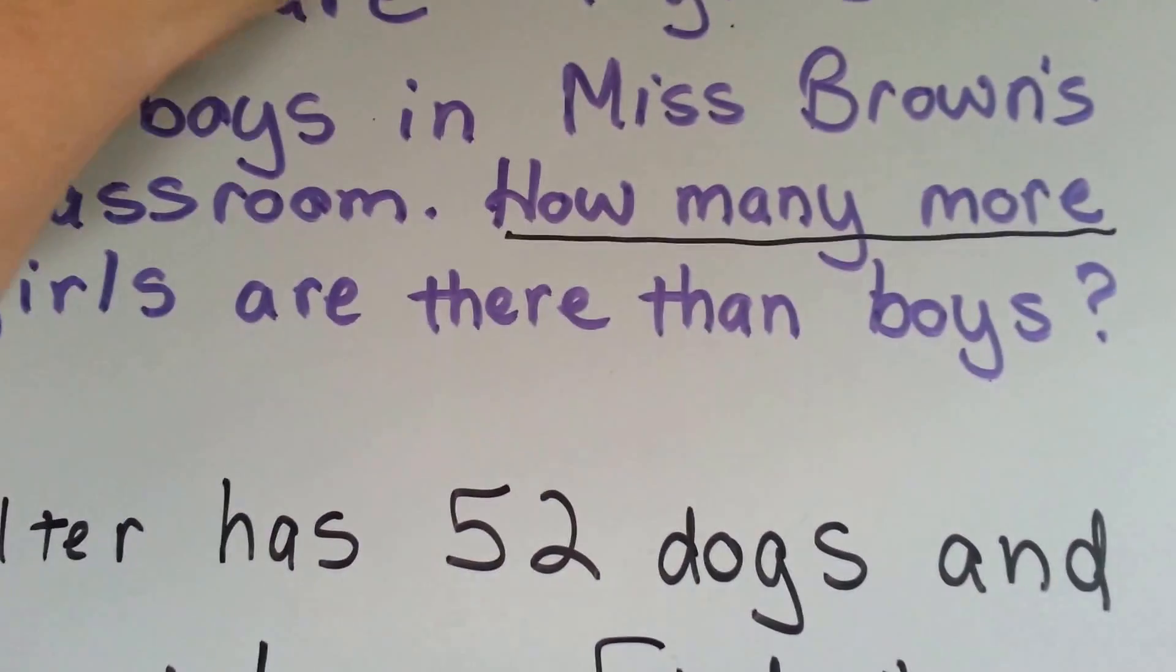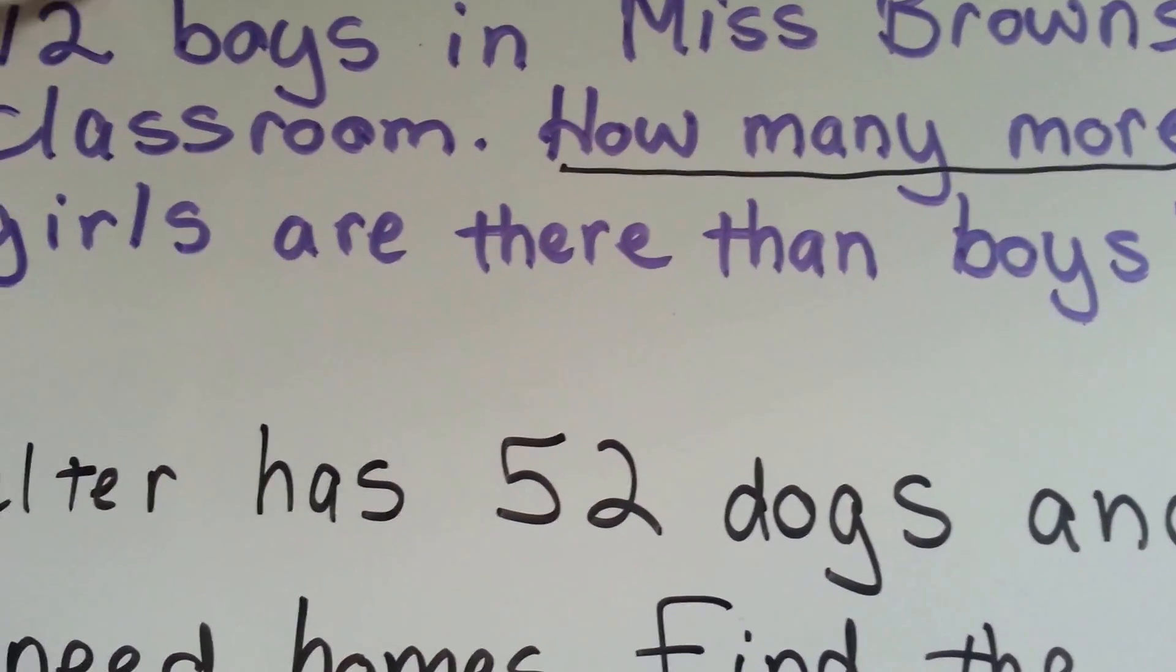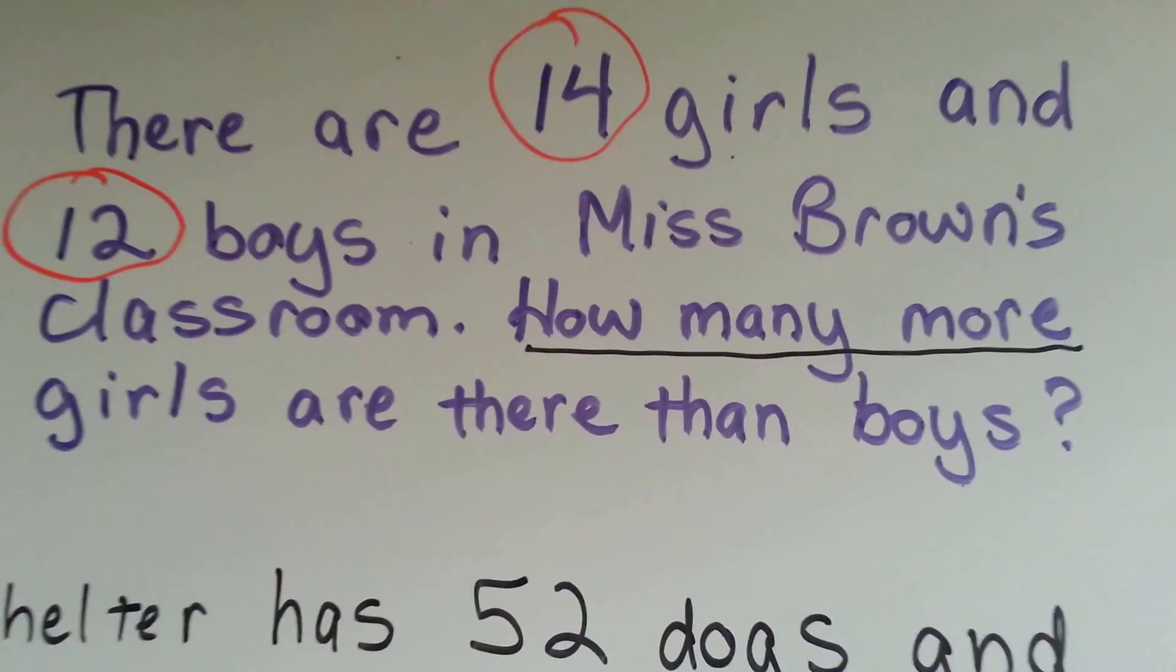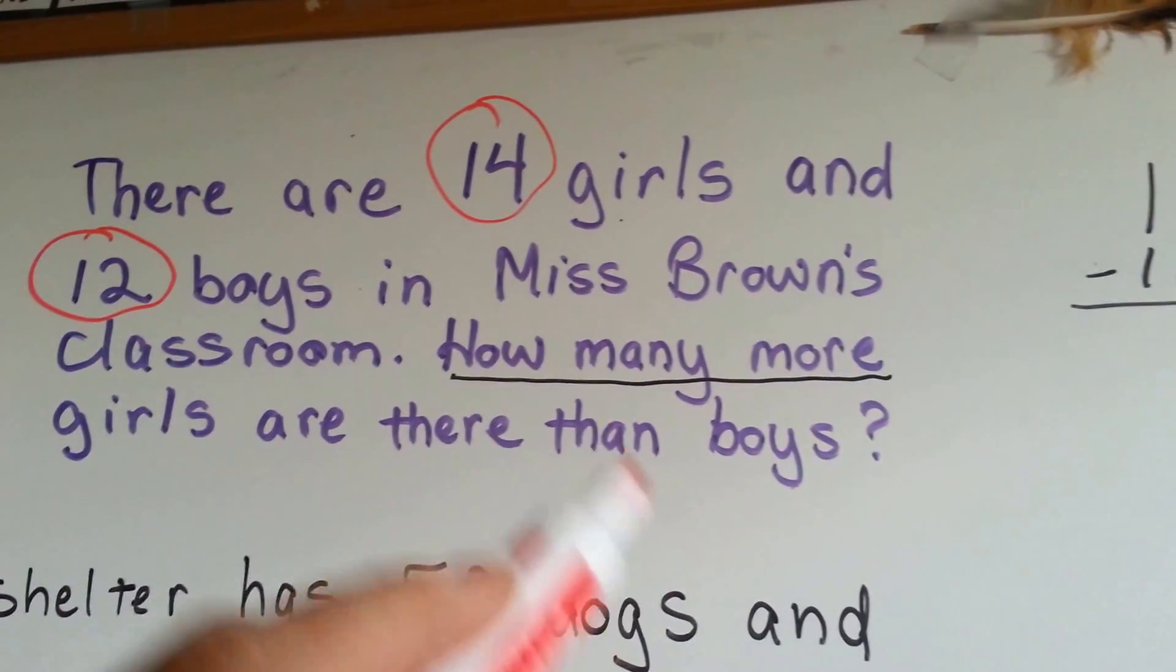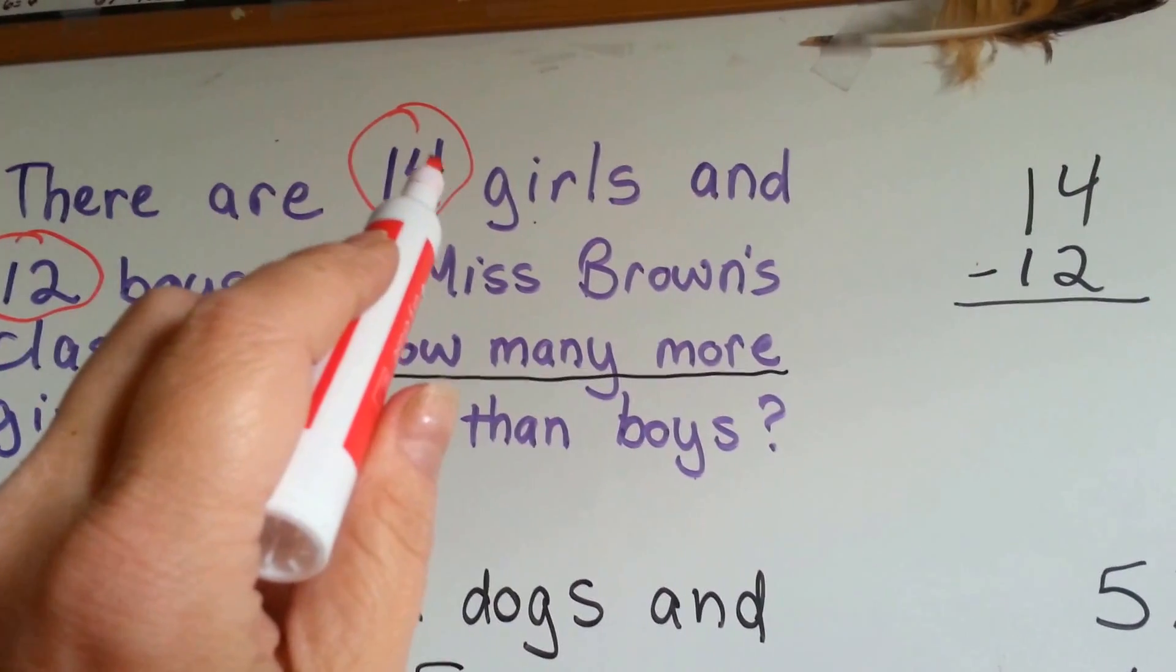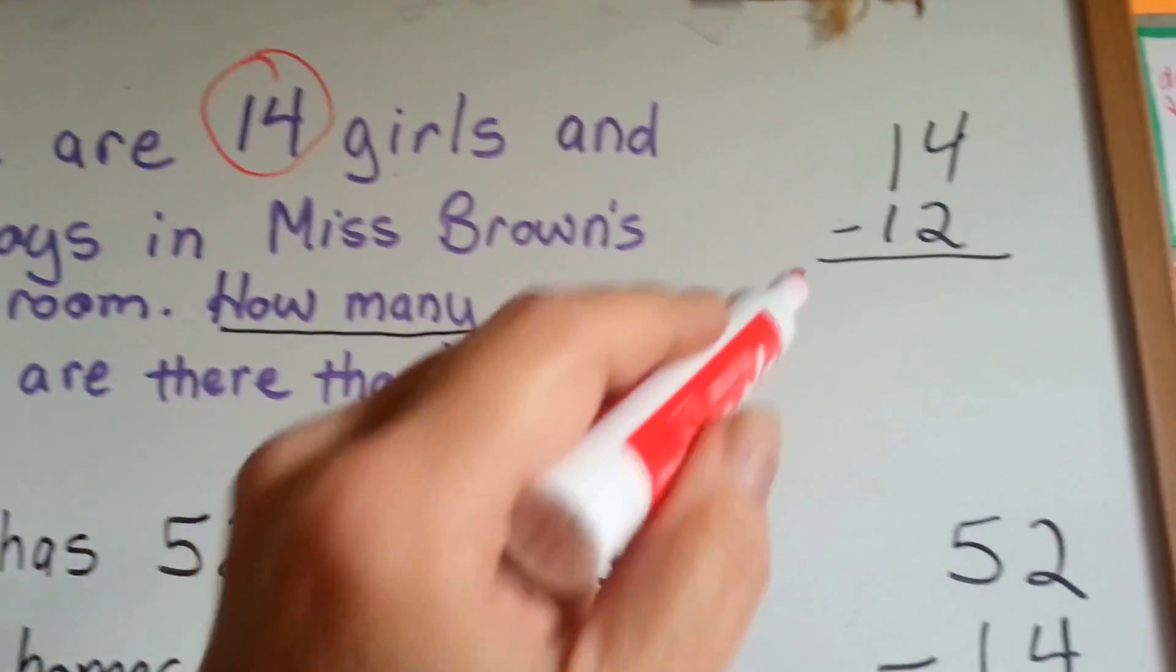So, we identify the numbers. We have 14 girls and 12 boys. Those are the numbers that we need to subtract. So, we're going to have 14 as the minuend and 12 as the subtrahend.